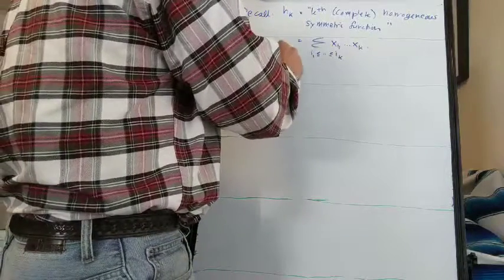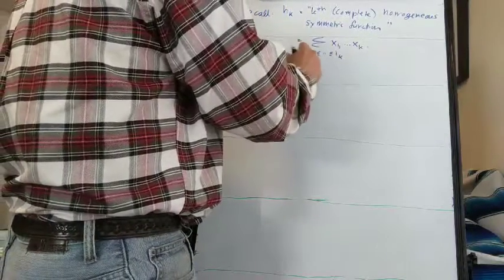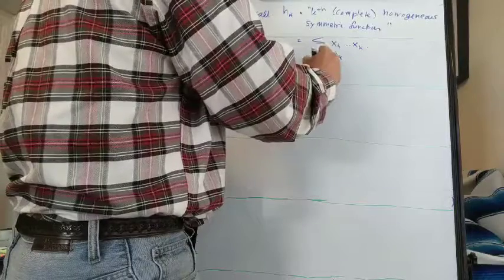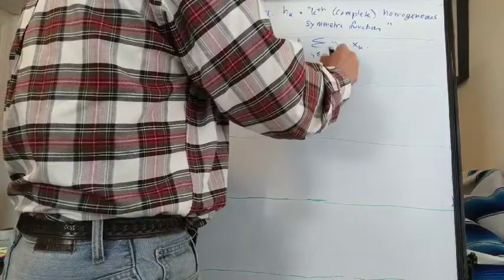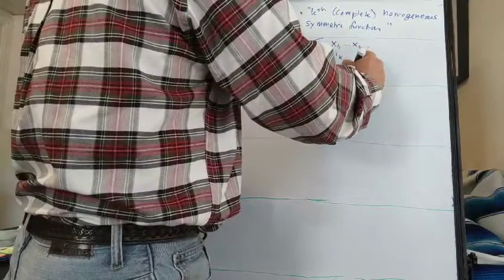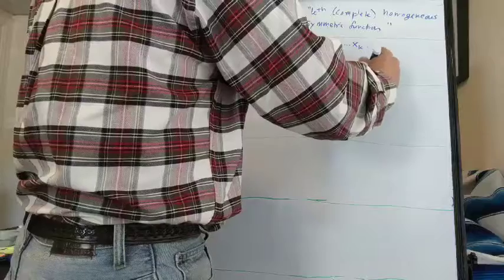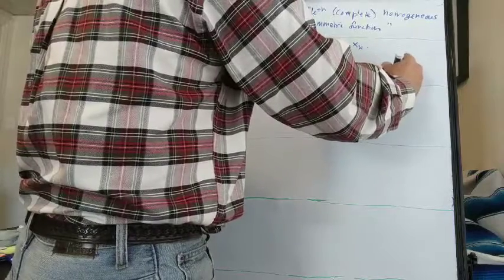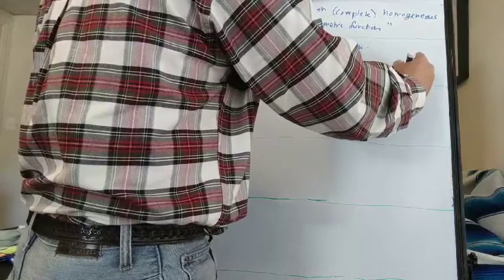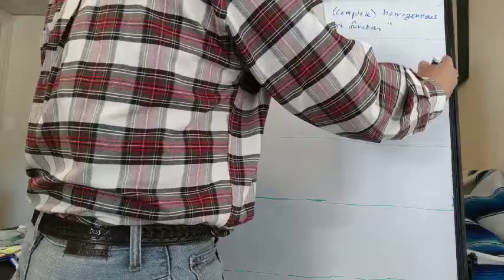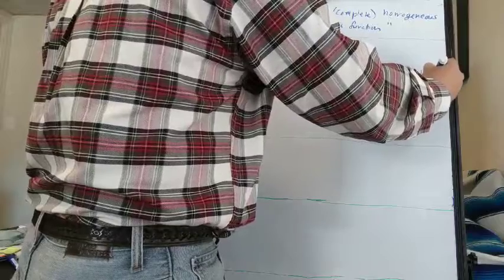And we define, if we have a partition lambda with l parts, h_lambda equals h_{lambda_1} times h_{lambda_2} and so on up to h_{lambda_l}.